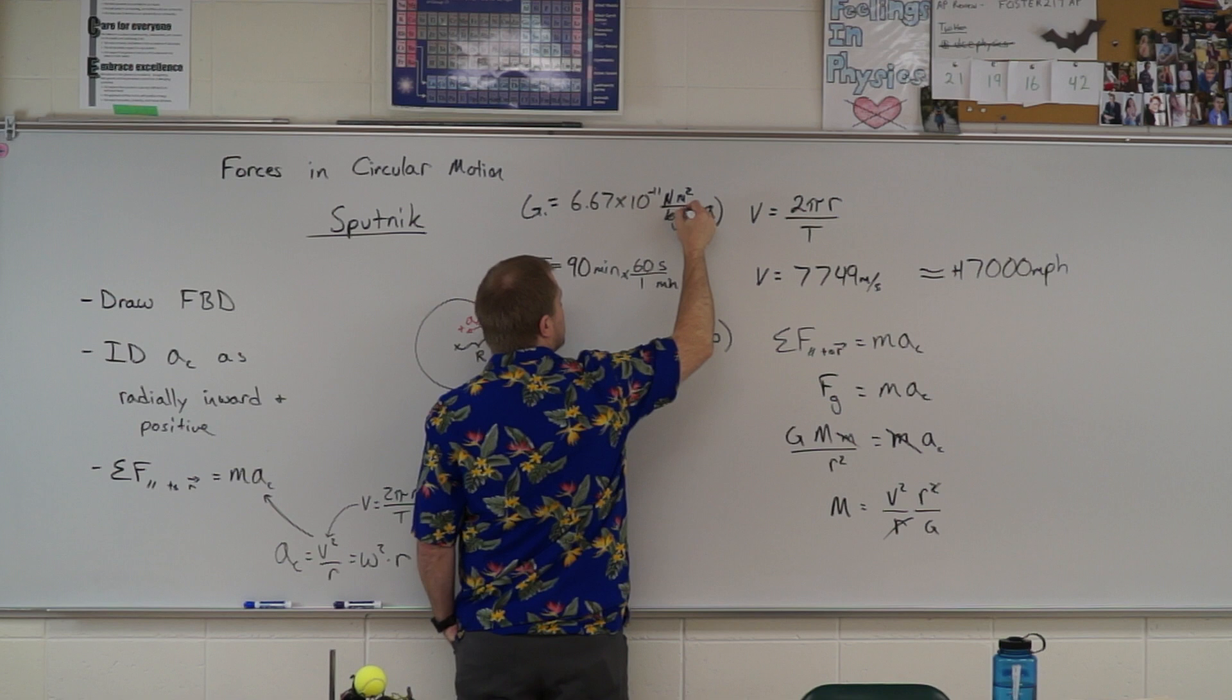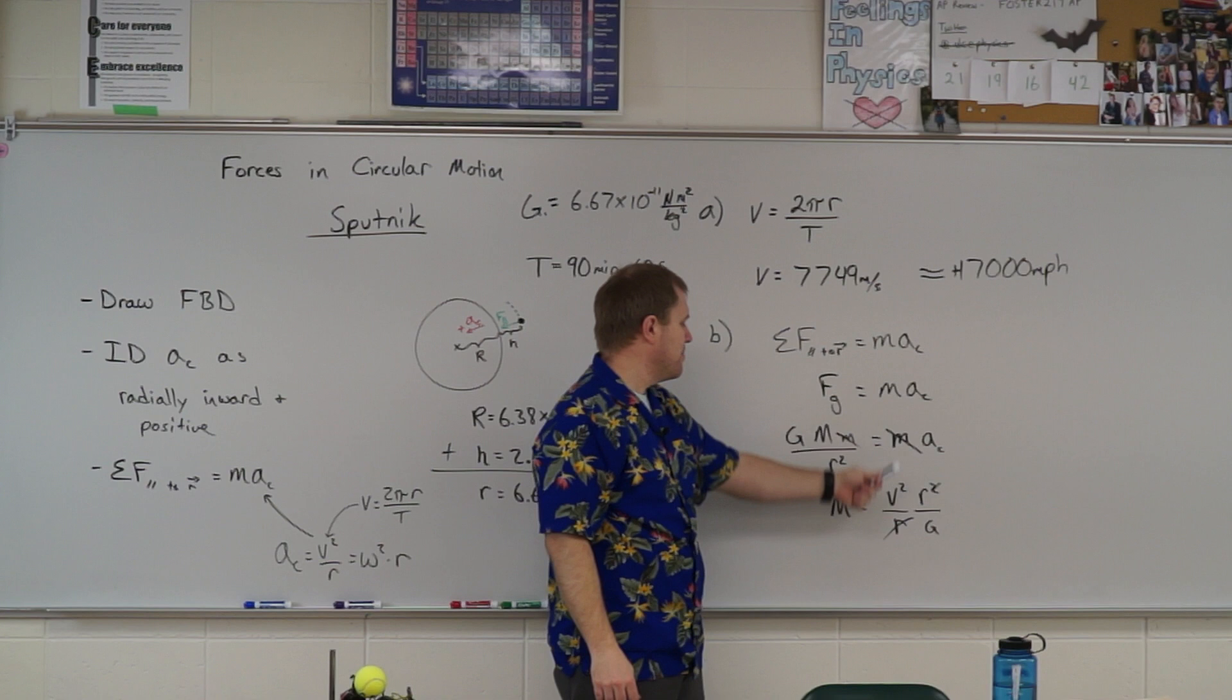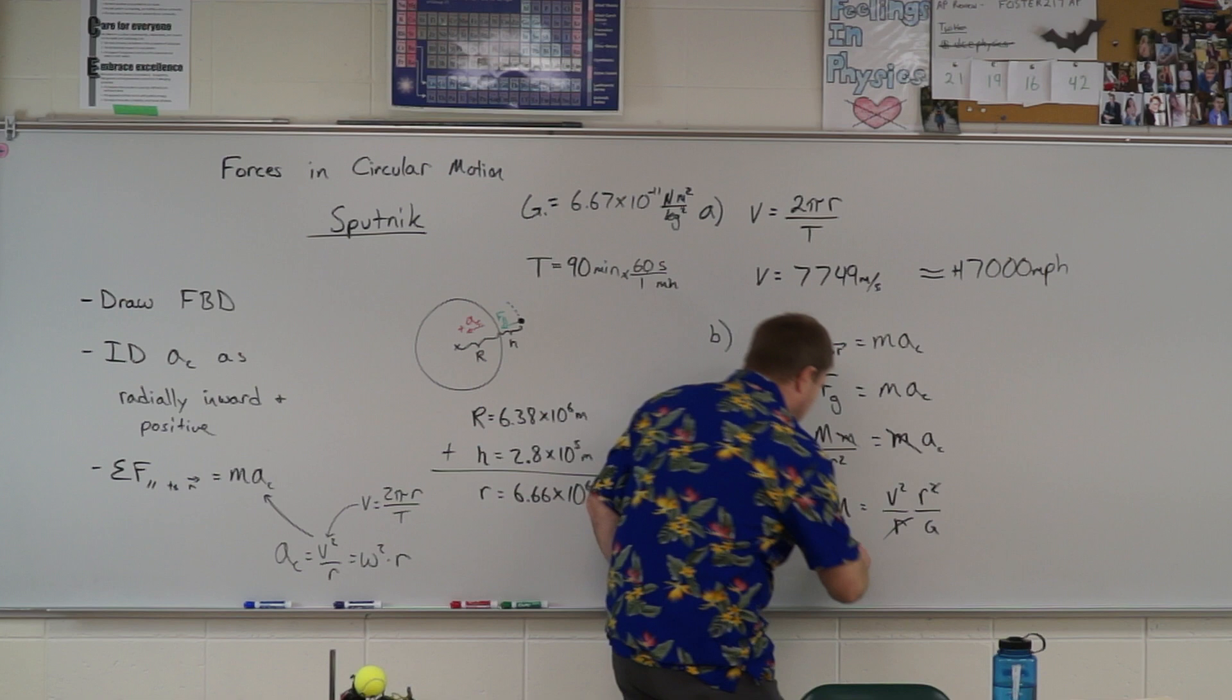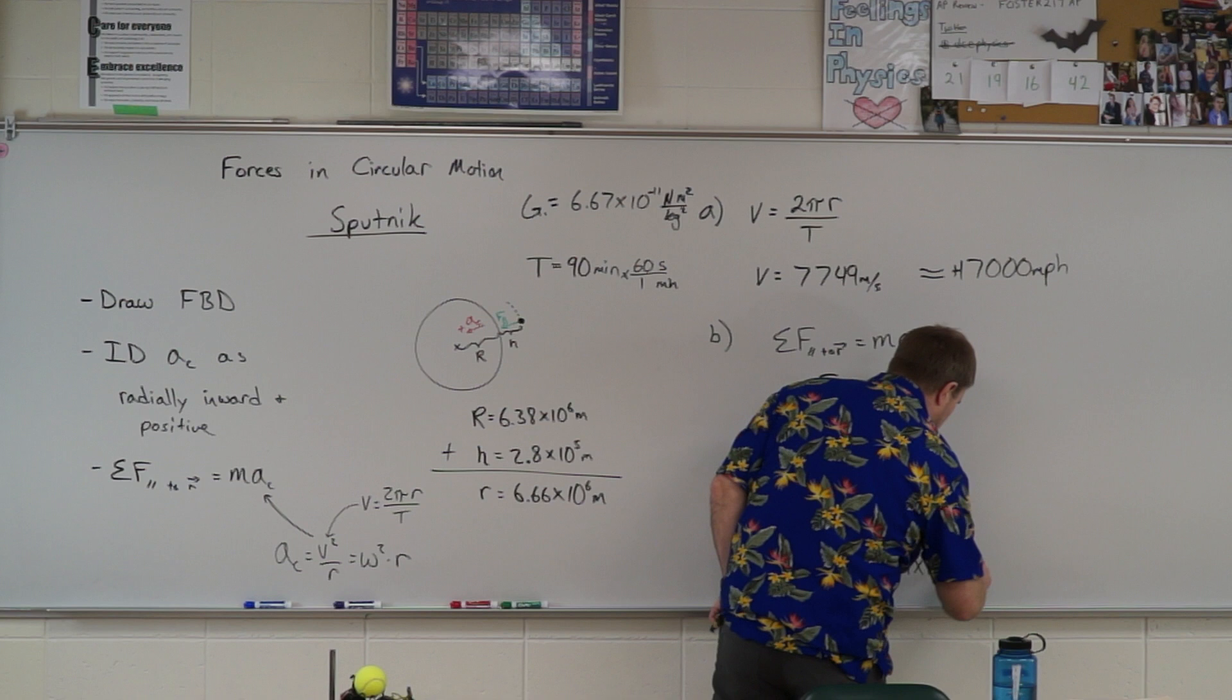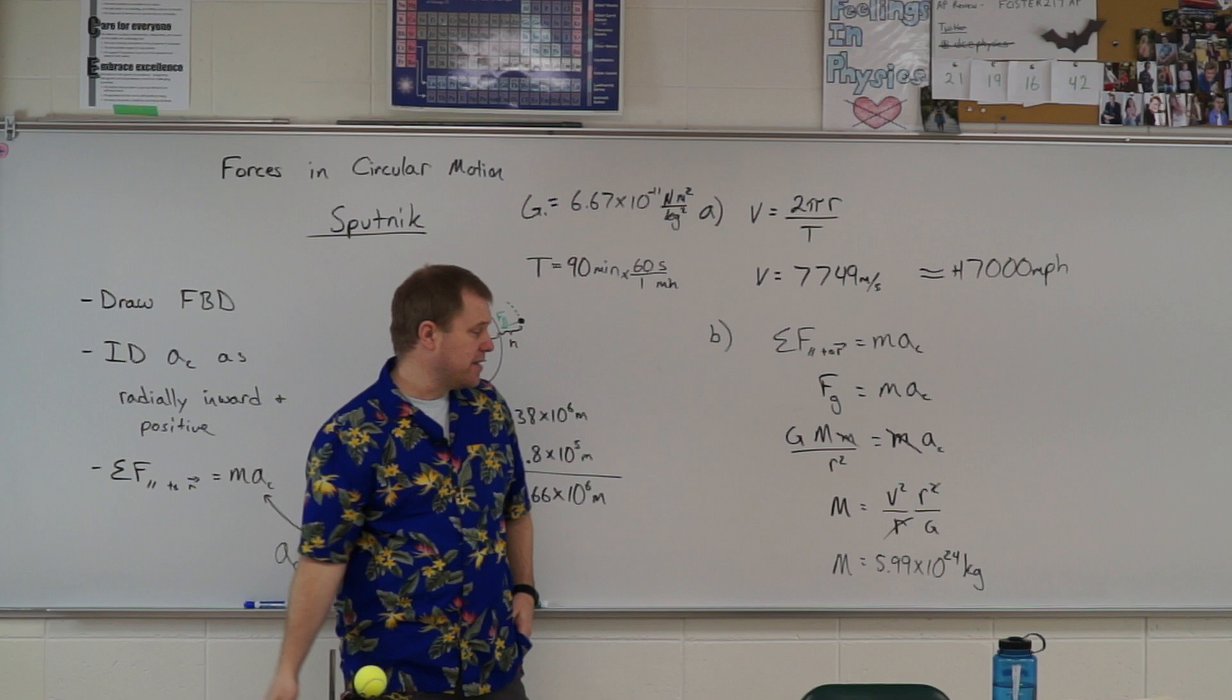All right, let's go ahead. Let's plug in that 7749 number. Let's plug in the 6.66 times 10 to the sixth. And let's plug in the big G. And we get a mass of the Earth of 5.99 times 10 to the 24th kilograms. Very close to the actual mass of the Earth, which is like 5.97, I think.